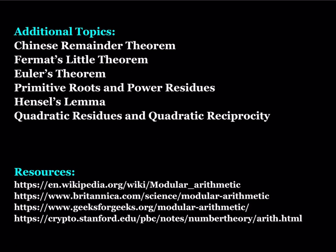This brings us to the end of the main content, but let me briefly talk about some additional topics. We have the Chinese Remainder Theorem for solving systems of congruences. Fermat's Little Theorem is very interesting, again for solving congruences. Euler's Theorem is obviously huge. There are also a couple of other topics — one video I made used Hensel's Lemma for a mod 49 problem involving a prime power modulus. And quadratic reciprocity is super interesting.